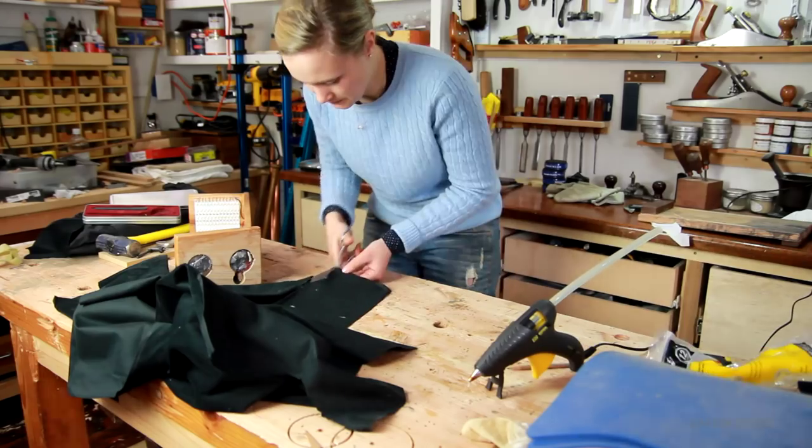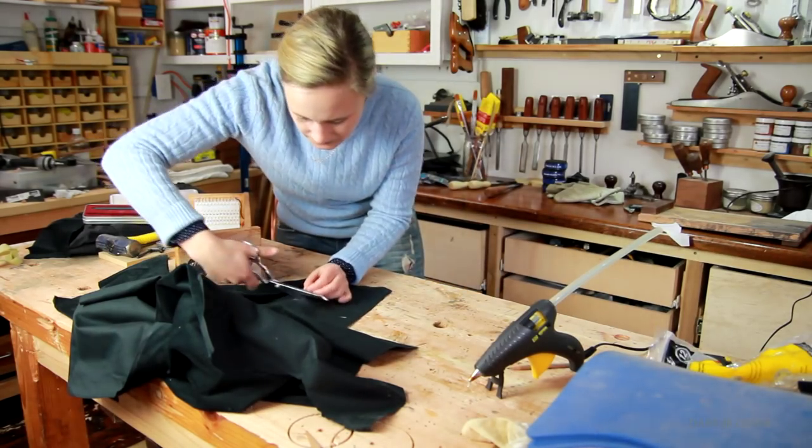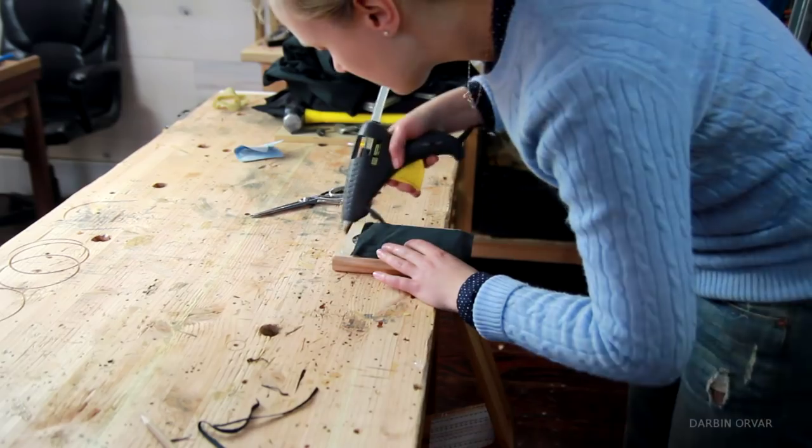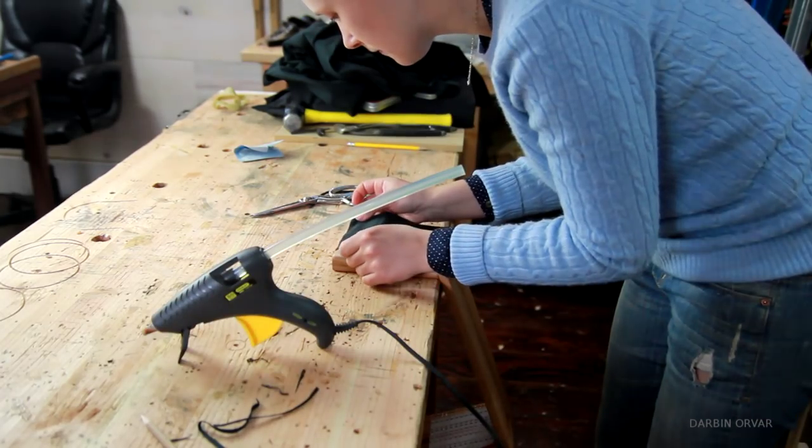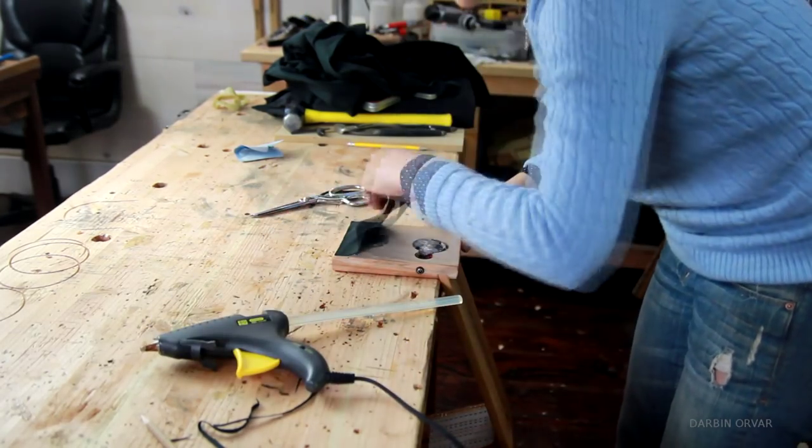And to really finish this piece off, I'm cutting up a piece of black fabric for the base. And I'm simply hot gluing that in place as well. And that way it'll be nice and protected, and soft on a table as well.